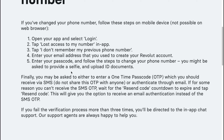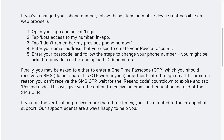You might be asked to provide a selfie and upload ID documents. Finally, you may be asked to either enter a one-time passcode received via SMS, or authenticate through email. If you can't receive the SMS OTP, wait for the resend code countdown to expire and tap 'Resend code' — this will give you the option to receive an email notification instead.